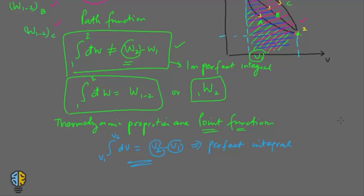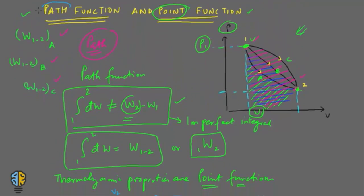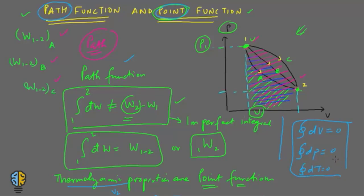So this is the difference between a path function and a point function: work is a path function and all thermodynamic properties are point functions. For a cyclic process, the change in a property — whether volume dV, pressure, or temperature — is zero. So for a cyclic process, the change in any thermodynamic property is zero. Now let's move on to find out the PDV work in various quasi-static processes.